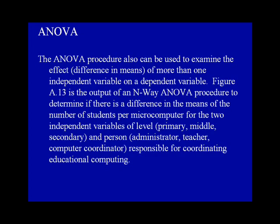The ANOVA procedure also can be used to examine the effect of more than one independent variable on a dependent variable. Figure 8.13 is the output of an N-way ANOVA procedure to determine if there is a difference in the means of the number of students per microcomputer for two independent variables: level, which is primary, middle, or secondary school, and person, which is the administrative teacher or computer coordinator responsible for coordinating educational computing.